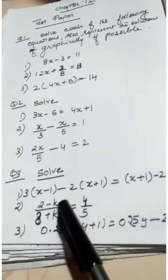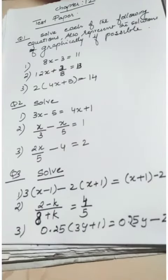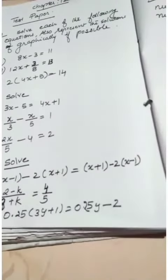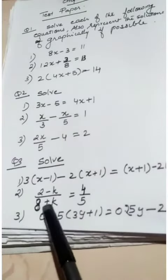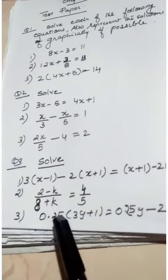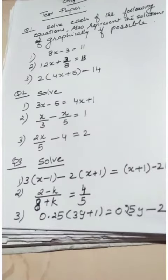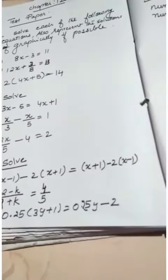Question number 3. Solve: 1) 3 into x minus 1 minus 2 into x plus 1 equal to x plus 1 minus 2 into x minus 1. 2) 2 minus k divided by 8 plus k equal to 4 by 5. 3) 0.25 into 3y plus 1 equal to 0.25y minus 2.